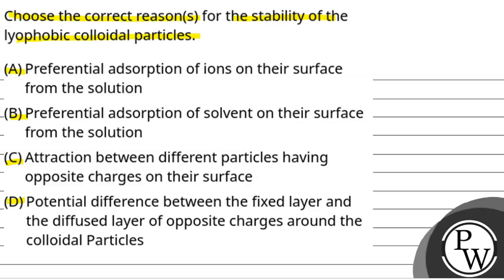Option A is preferential adsorption of ions on their surface from the solution. Option A is correct, because when the adsorption of lyophobic colloids occurs on their surface from the solution, the ions are surface adsorbed.